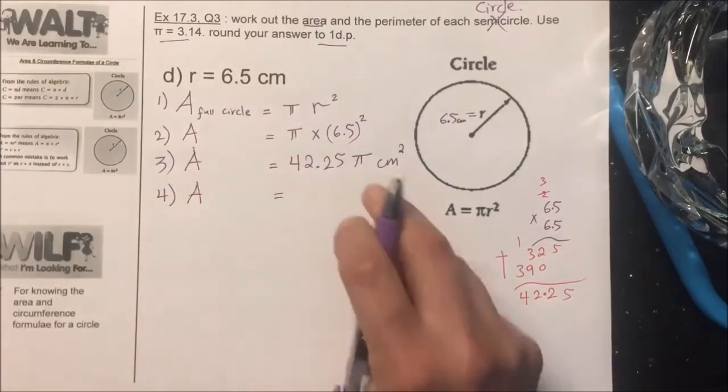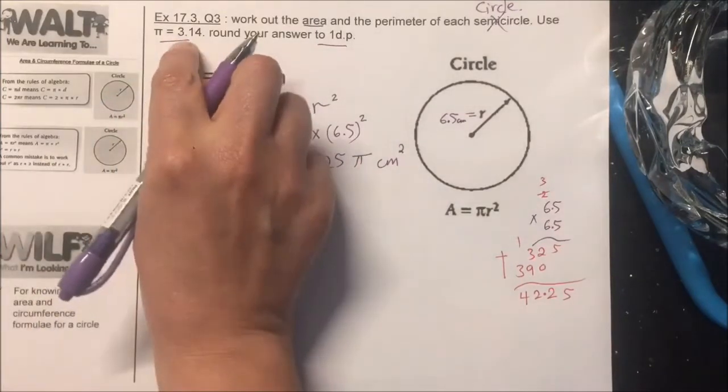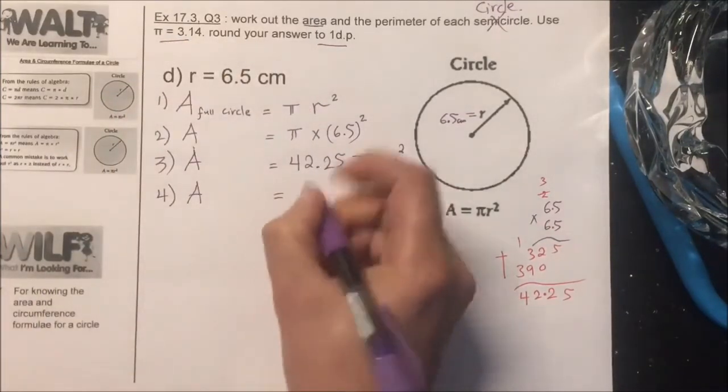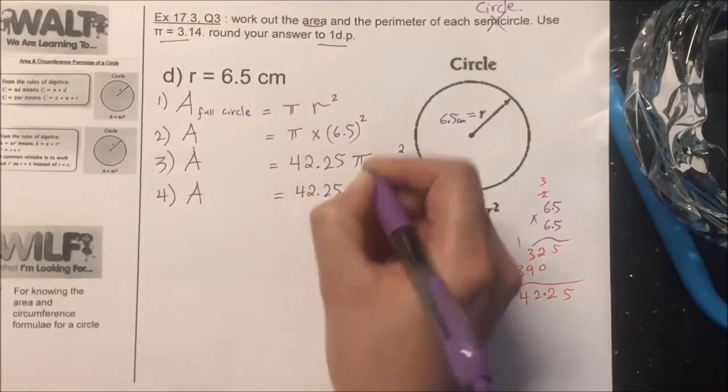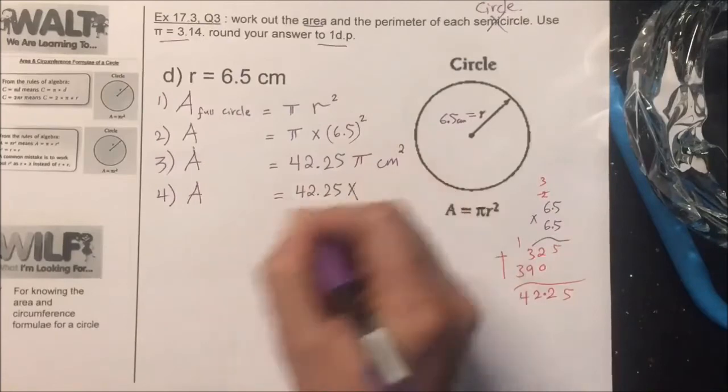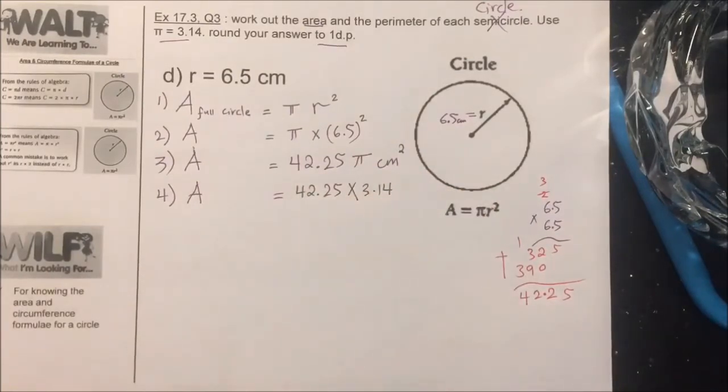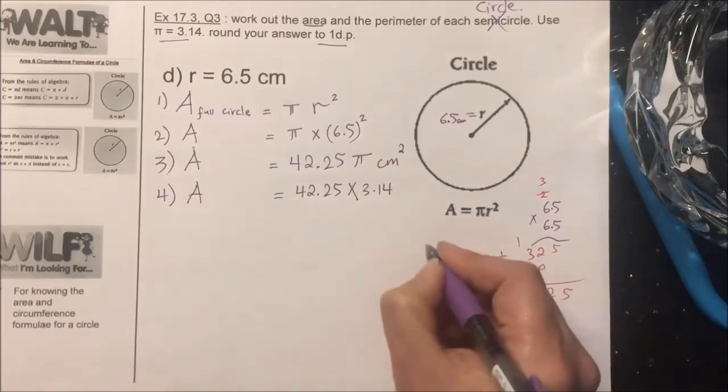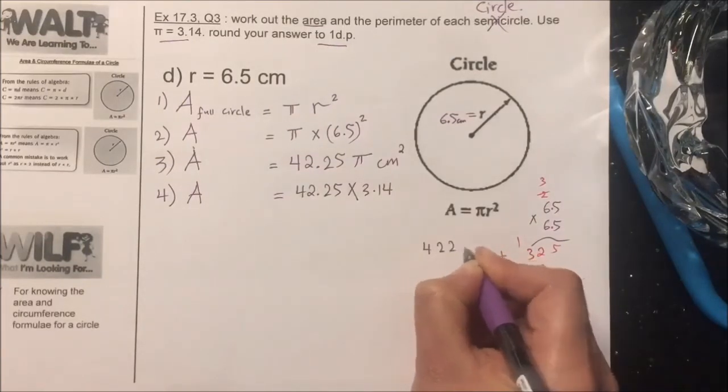Step number four: we are going to substitute pi and replace it with 3.14. So it's 42.25 pi, it means times 3.14, and I'm going to multiply.